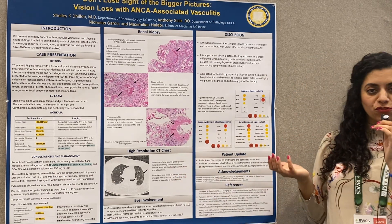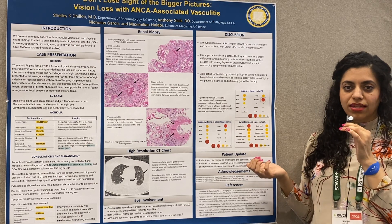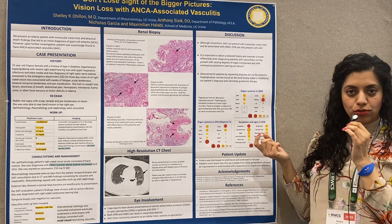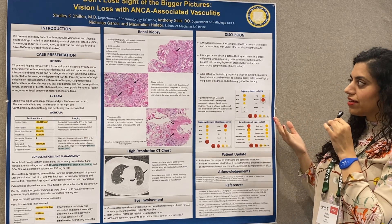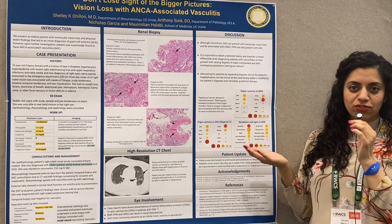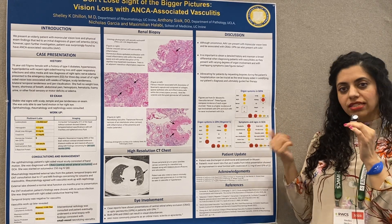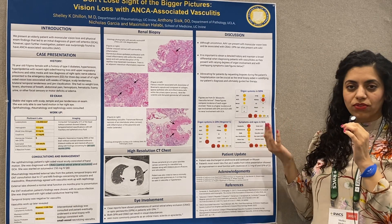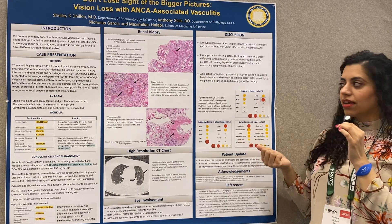The three takeaways from this case are: First, although uncommon, ANCA-associated vasculitis can be associated with monocular vision loss in the setting of central retinal arterial occlusion or optic perineuritis. Second, it is important to review a detailed patient history and maintain a broad differential when it comes to vasculitis. Lastly, it is critical to advocate for the patient regarding biopsies — the temporal and renal biopsies were both important, and the renal biopsy ultimately diagnosed the patient and guided her therapy.